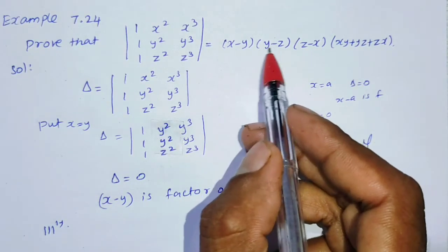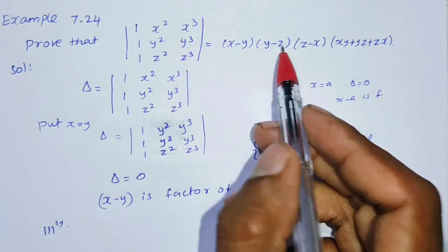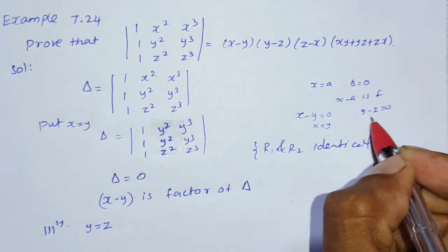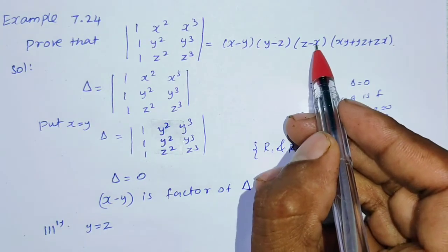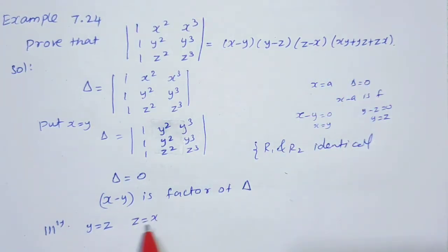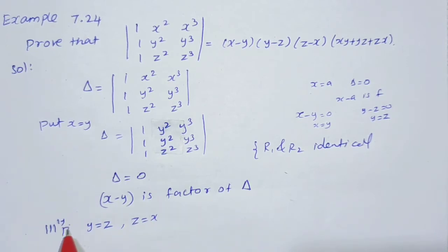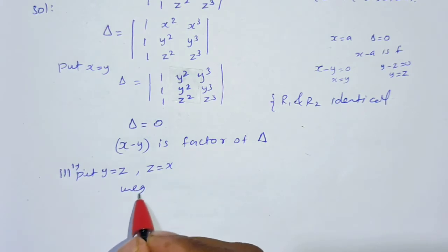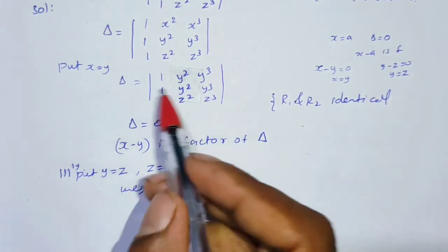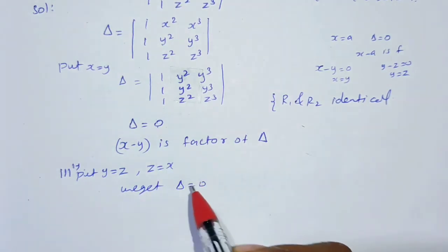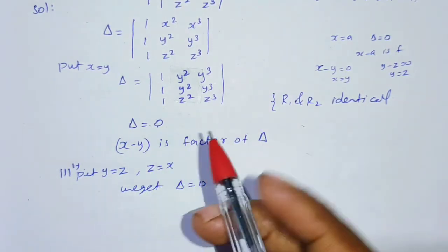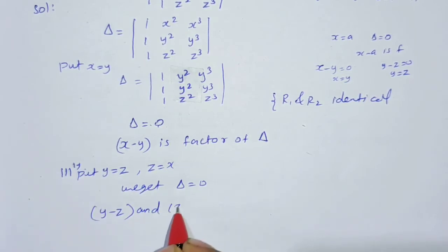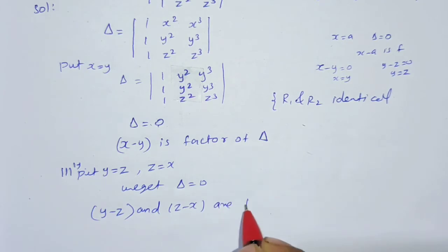Similarly, we substitute y equal to z. If we substitute y equal to z, we again get delta equal to zero. Therefore y minus z and z minus x are also factors of delta.